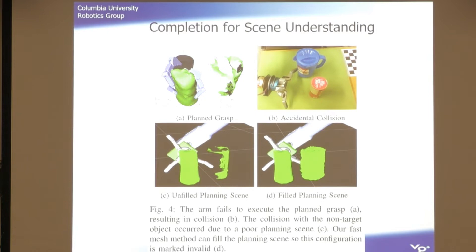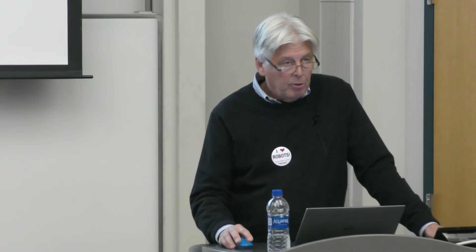Key ideas from shape completion: it's fast, works online — once training is done, you give it an RGB image and get a completed object. The smoothing is also fast. We can do scene completion for path planning. It outperforms other methods. But there's always a but: you can still have occlusion causing error. Even if you do shape completion, if you're looking at a coffee mug and can't see the handle, it's not clear you'll get a completion that has the handle because it doesn't really know it's there. So what can we do about that?